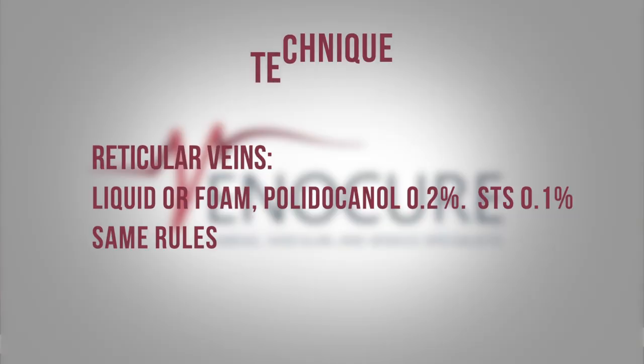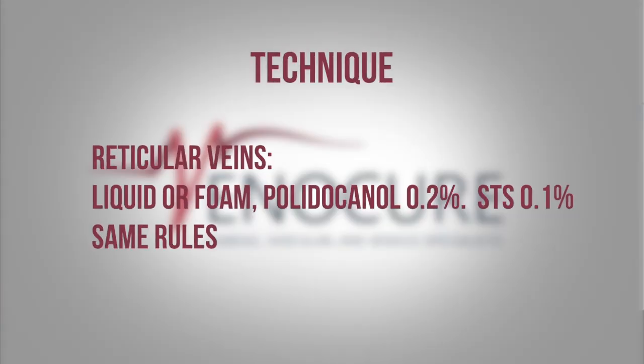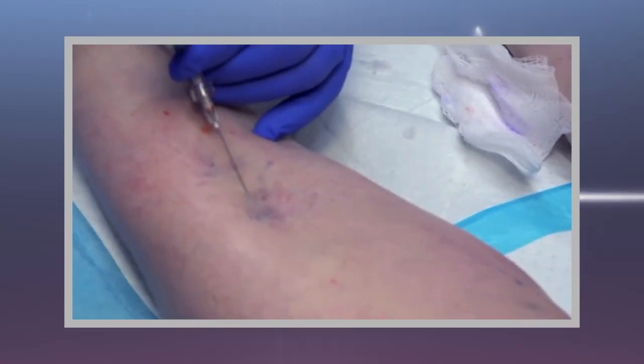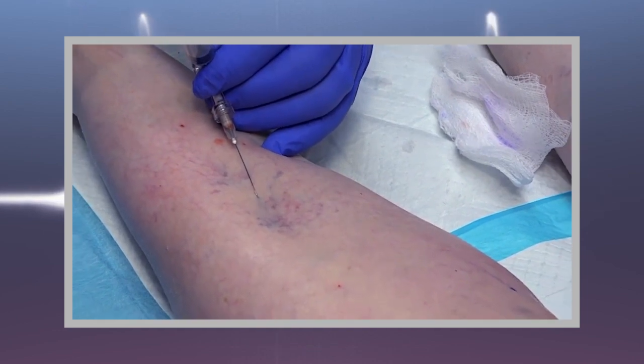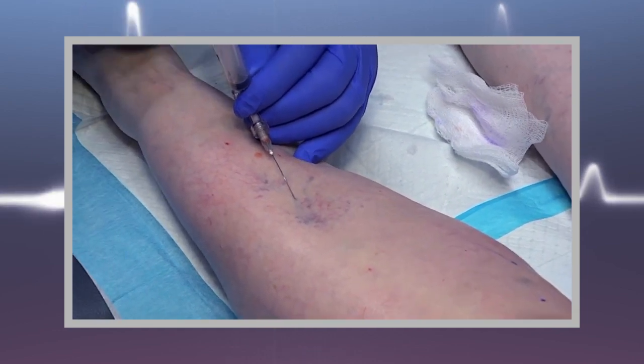Now, reticular veins are a little bit bigger — flat, greenish veins about two to four millimeters. You go a little higher on concentration. The recommended concentration is listed, but in reality I use about 0.4% for these. You want to give them a more powerful medicine.